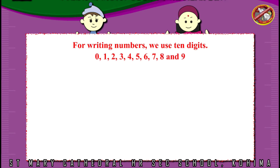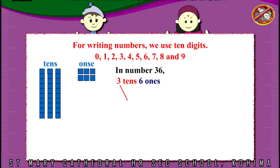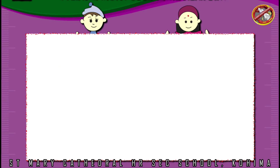and 9. For example: 3 tens and 6 ones make 36. In the number 36, 3 and 6 are called digits. The digit 3 indicates the number of tens. The digit 6 indicates the number of ones.